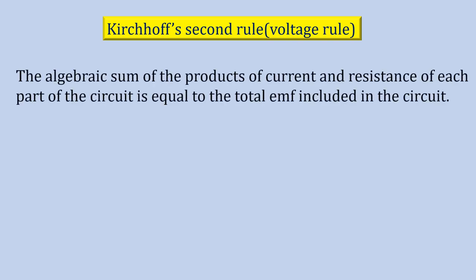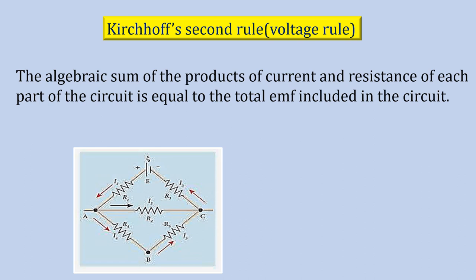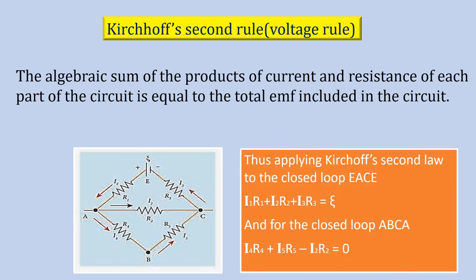Kirchhoff's second rule or voltage rule. The algebraic sum of the products of current and resistance of each part of the circuit is equal to the total EMF included in the circuit. For this we have to consider the loops of the circuit. Let us consider the loop EACE. In this loop the current is flowing in only one direction and so all the part of the circuit is considered to be positive. All the part of the circuits where the current is flowing is considered to be positive. That is I1 R1 plus I2 R2 plus I3 R3 is equal to epsilon.